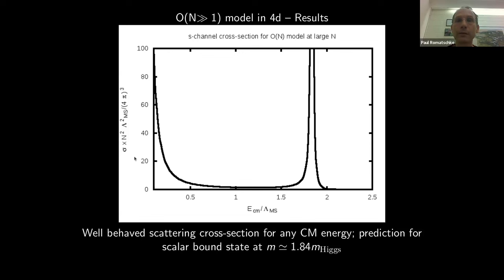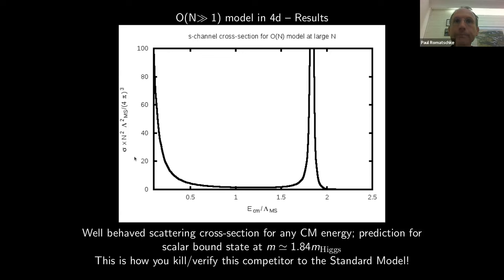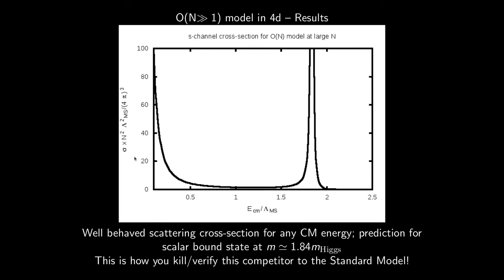In response to a question about whether resumming the Coleman-Weinberg calculation over different analytic continuation contours should reproduce these results: yes, that is precisely what the group is working on. The scalar part results are in hand, but the full calculation requires including the gauge fields, quarks, and leptons at least to one-loop order — an estimated six months of work to complete.